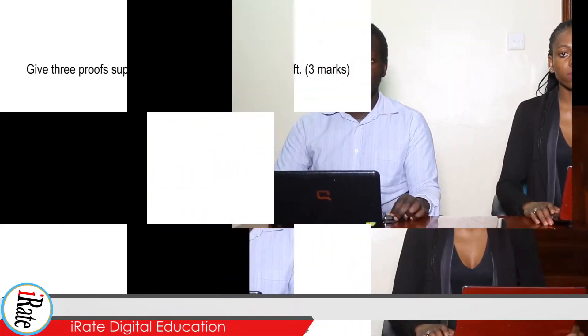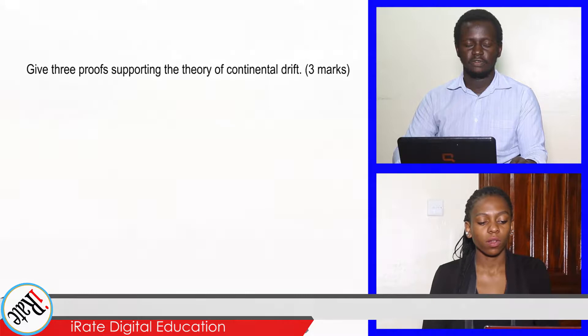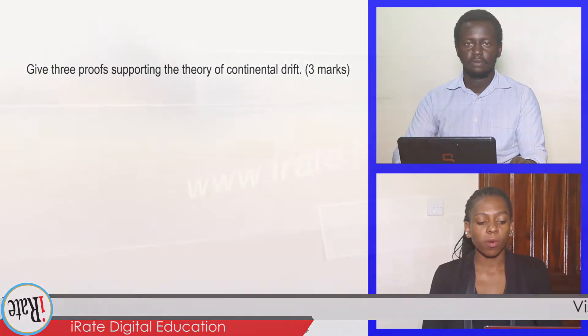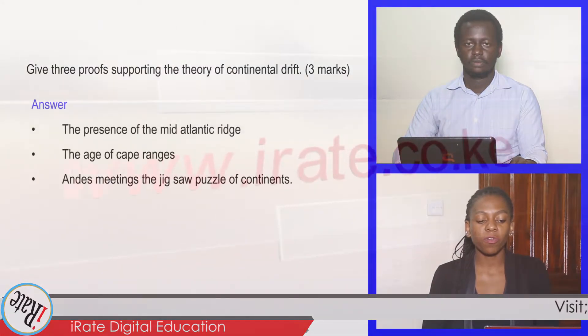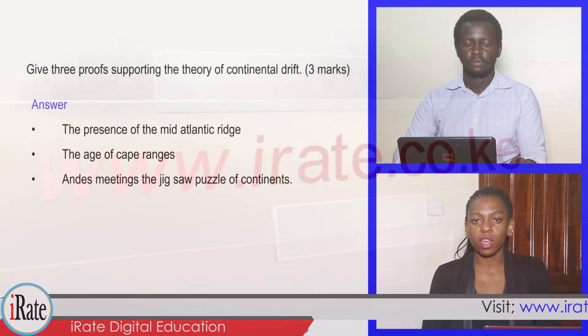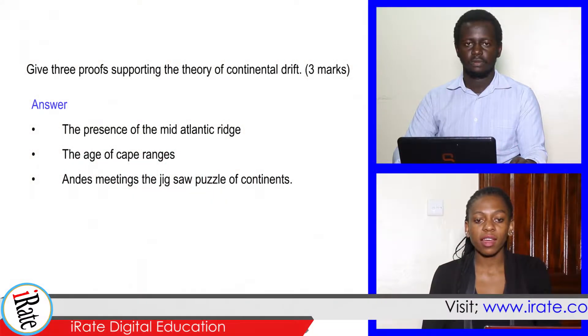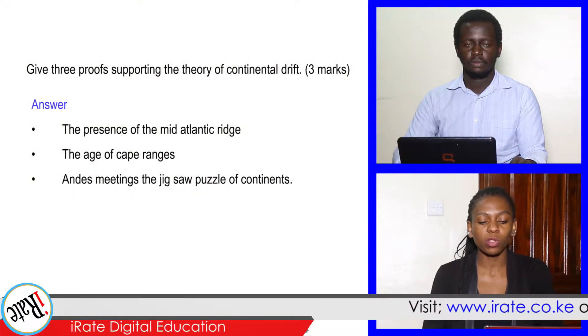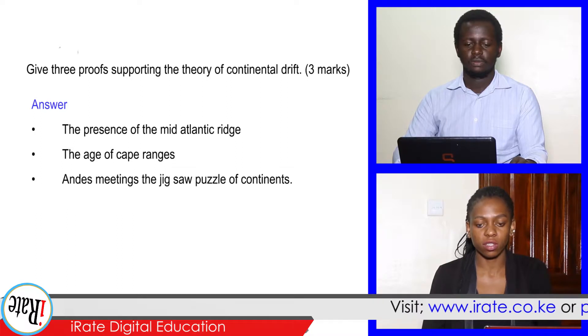Give three proofs supporting the theory of continental drift. Number one, the presence of the mid-Atlantic ridge. Number two, the edge of the Cape ranges. Number three, the Andes meeting the jigsaw puzzle of continents.